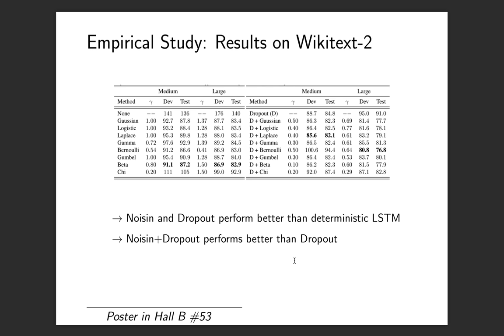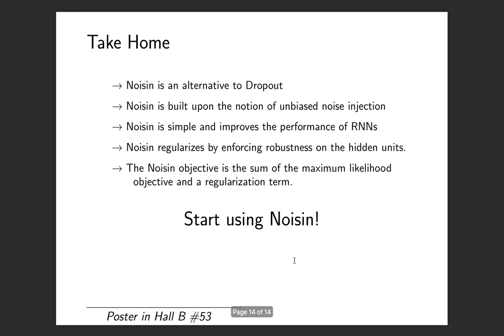We recovered the same results in WikiText-2. So I hope that you will start using NOISIN. It is an alternative to dropout that is built on the notion of unbiased noise injection. It is simple and improves the performance of RNNs and it enforces robustness. That's how it regularizes. I hope you stop by poster number 53 and my friend Francisco Ruiz will answer your questions. I unfortunately couldn't make it to Stockholm because my visa didn't come on time. Thank you for your attention. Bye.